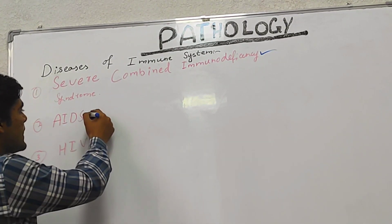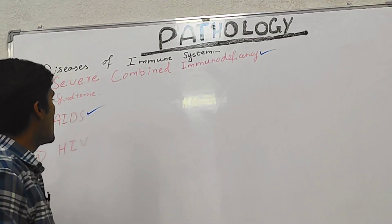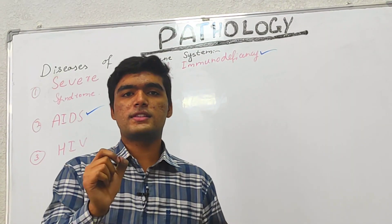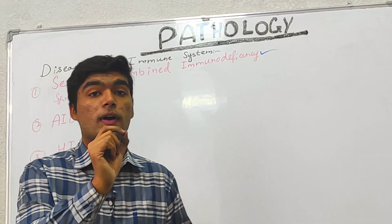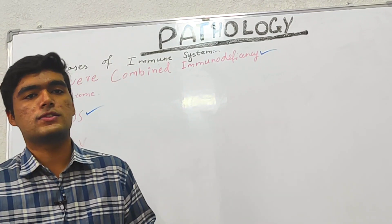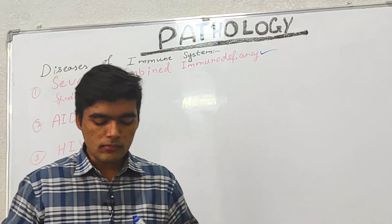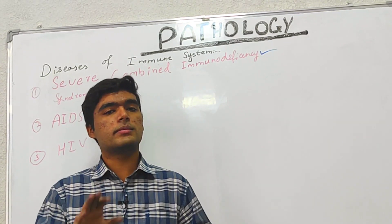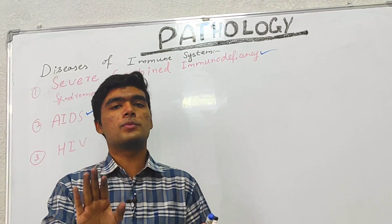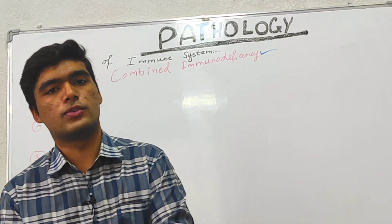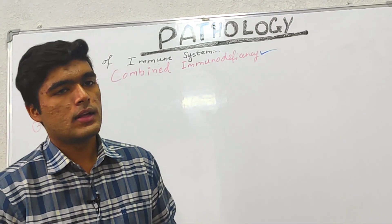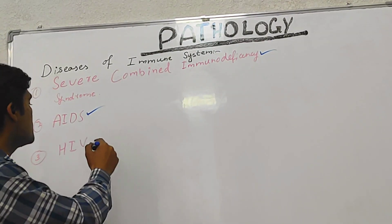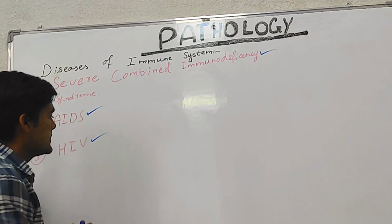Second is AIDS — acquired immunodeficiency syndrome. As its name shows, it is an acquired immunodeficiency. The virus attacks our immune system, and as a result, our immune system fades off.